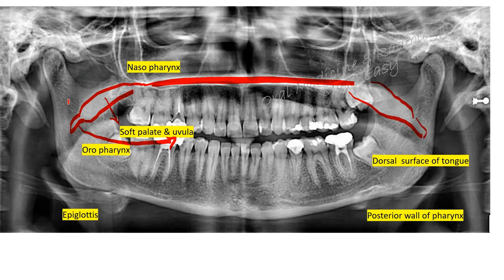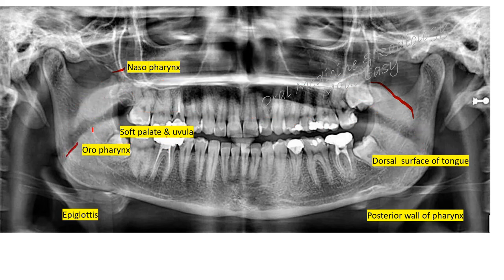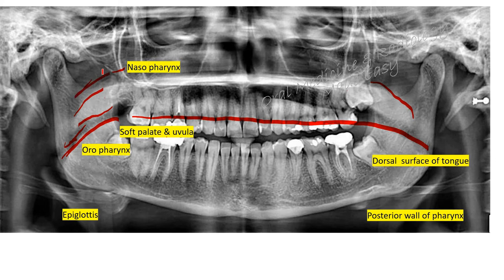The radiolucent shadow seen here is the nasopharynx, and this shadow is the oropharynx — that is a space, so it appears as a radiolucent area. Below the palate you can also see a faint radiopaque shadow, and that is the dorsum of the tongue. Between the dorsal surface of the tongue and the soft palate is the oropharynx, and above the soft palate is the nasopharynx.